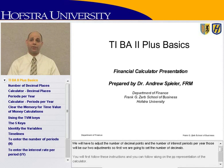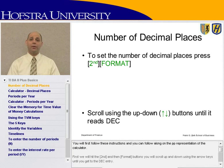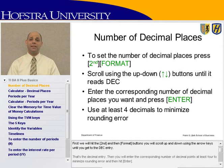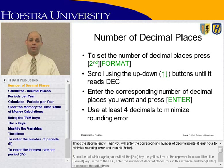Those will be our two adjustments. First, we're going to set the number of decimals. You will follow these instructions and can follow along on the PowerPoint representation of the calculator. First, hit the Second and then Format button. You will scroll up and down using the arrow keys, located on the top row, until you get to the DEC entry — that's the decimal entry. Then enter the corresponding number of decimal points, at least four to minimize rounding error, and then hit Enter.